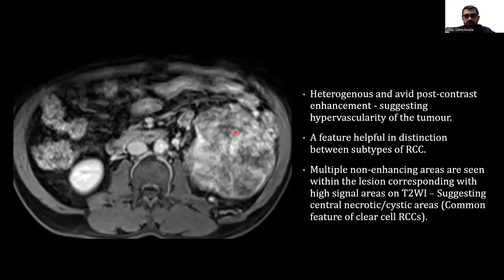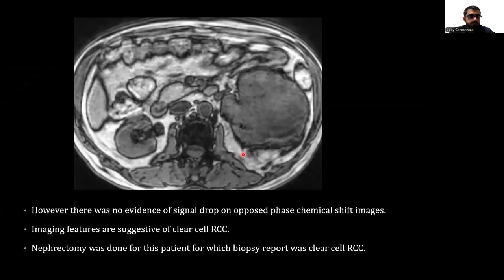Heterogeneous and avid post-contrast enhancement is noted suggesting hypervascularity of the tumor, a feature helpful in distinction between subtypes of RCC. Multiple non-enhancing areas are seen within the lesion with high signal areas on T2-weighted images suggesting central necrotic or cystic areas, a common feature of clear cell type RCC. However, there was no evidence of signal drop on opposed-phase chemical shift images. Imaging features are suggestive of clear cell type RCC. Nephrectomy was done for this patient, and biopsy confirmed clear cell type RCC.